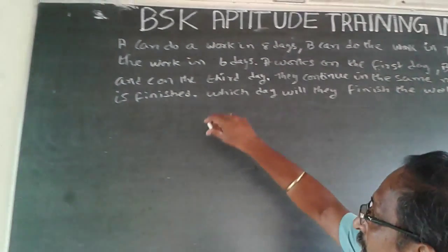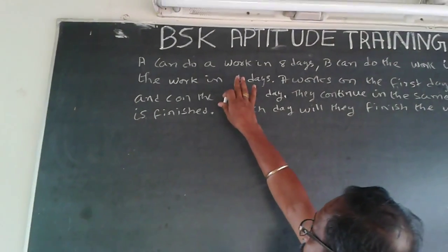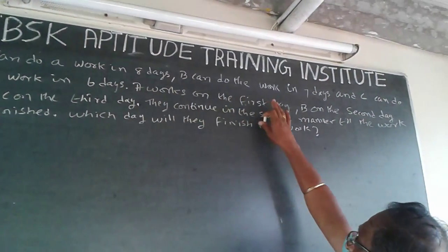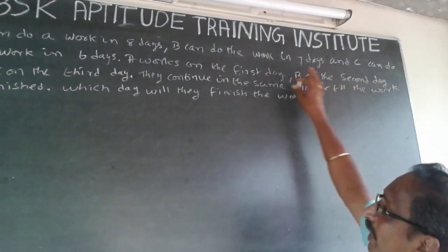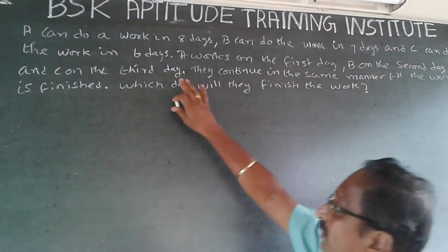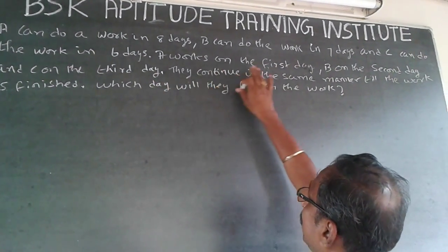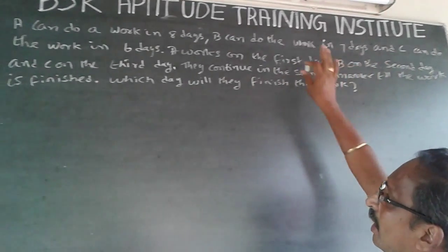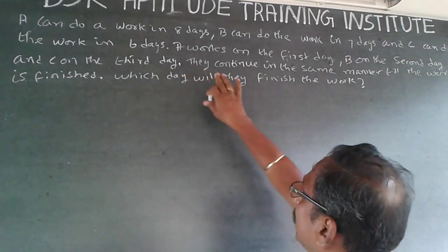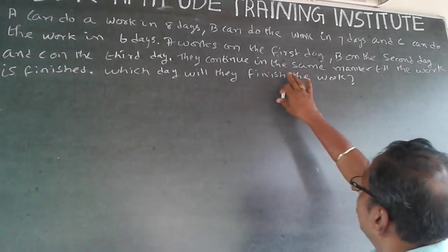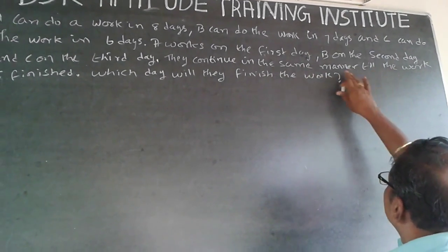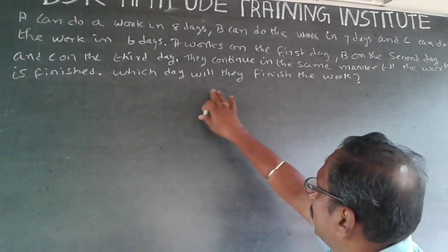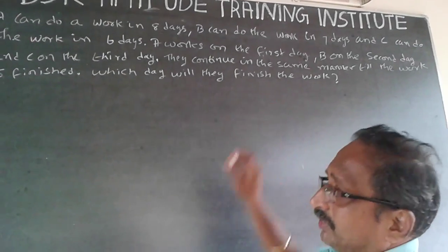The question is: A can do the work in 8 days, B can do the work in 7 days, and C can do the work in 6 days. A works on the first day, B on the second day, and C on the third day. They continue in the same way till the work is finished. Which day will they finish the work?